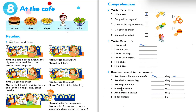Number three: are chips healthy? No, they aren't — chips are unhealthy because they have oil in them. Number four: is salad healthy? Yes, it is. Number five: are burgers healthy? The conversation says 'they aren't healthy,' so the answer is no, they aren't.